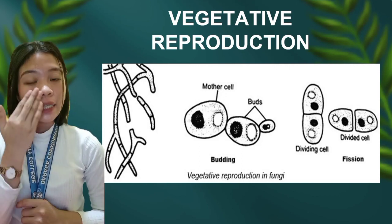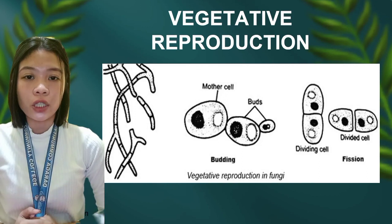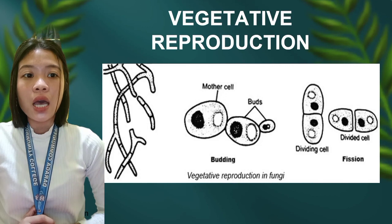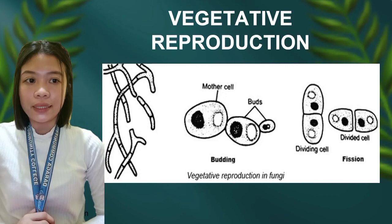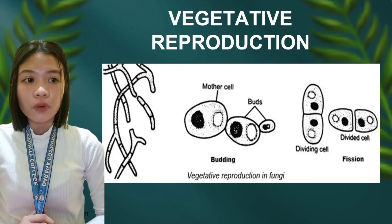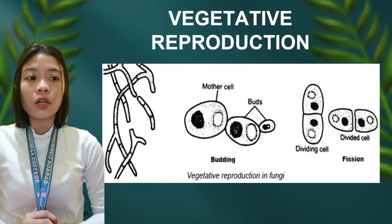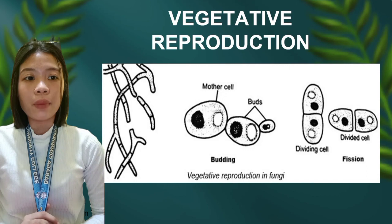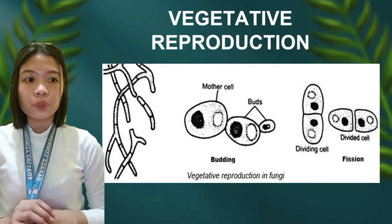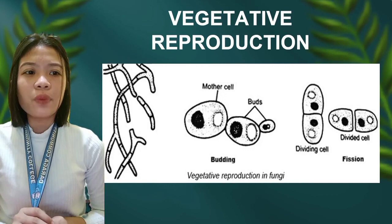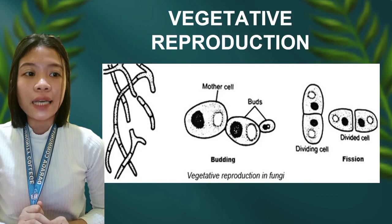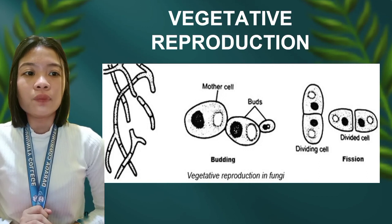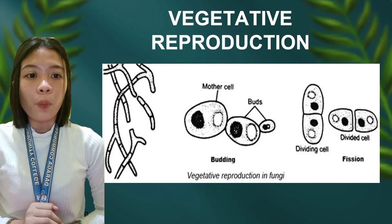The first is fragmentation. Fragmentation forms from cloning of organisms where the organism splits. The mycelium of the fungus breaks down into smaller pieces and each piece develops into a new separate mycelium — meaning it is breaking down from the mother cell to the daughter cell. This can be seen in molds.